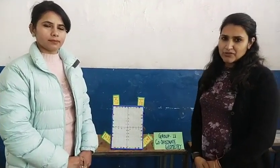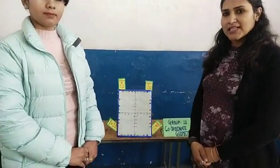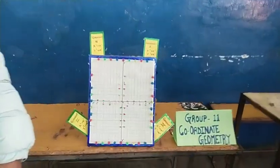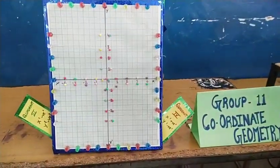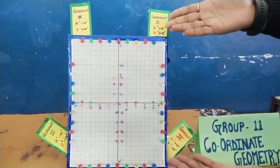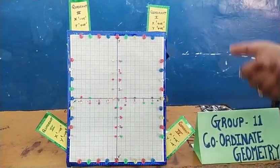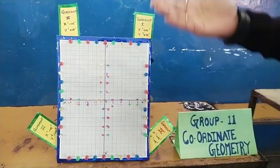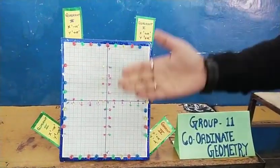Hi, today we are taking the topic coordinates metric, which is of secondary level. As you all know, this is called the Cartesian plane, in which we have the x-axis, y-axis, and 4 coordinates.